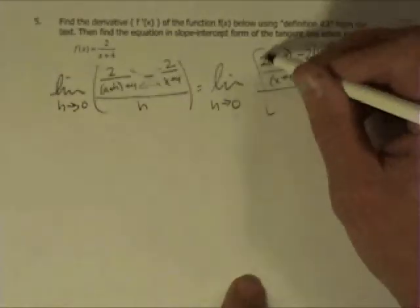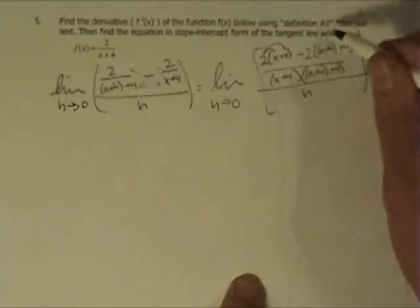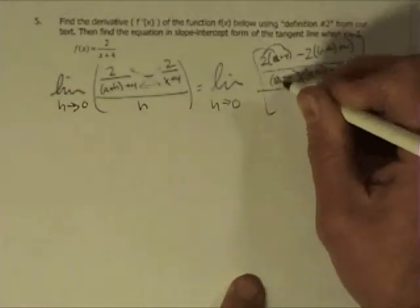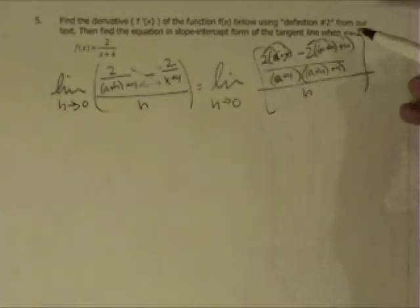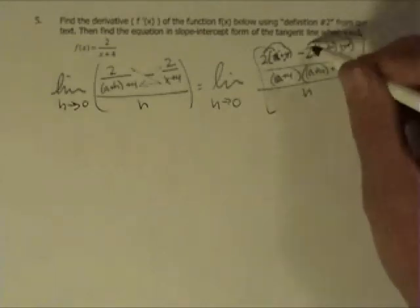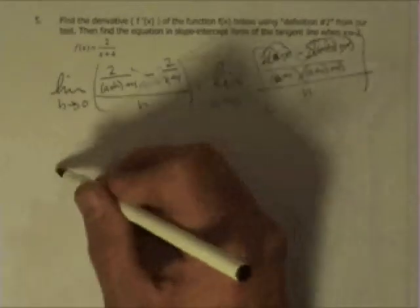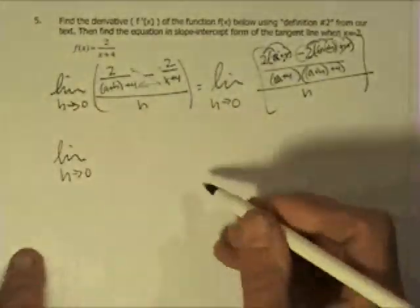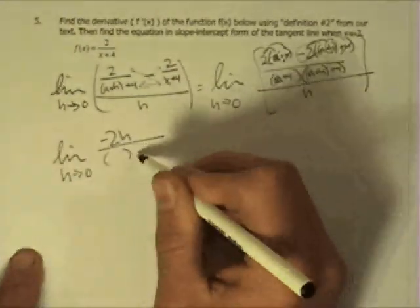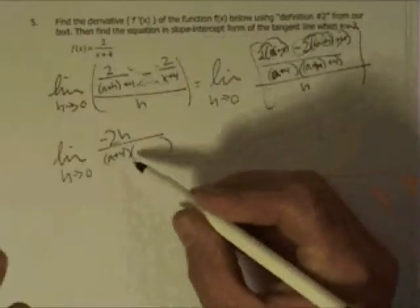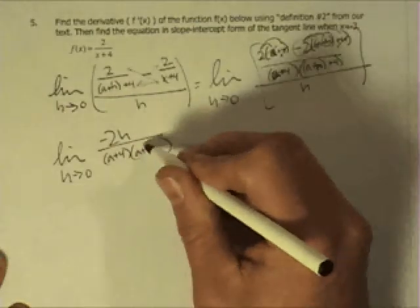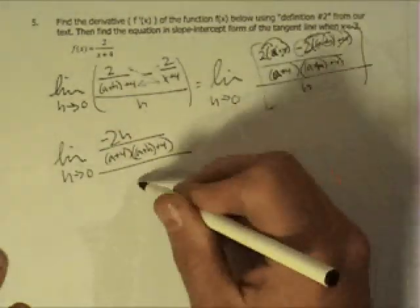All right, well, once you do that, and you distribute in 2x and then 8, and then you get, oh, that should be a, a plus 4, sorry. You get 2a plus 8, and then you get negative 2a, negative 2h, and then negative 8, so you'll see the 2a cancels with the negative 2a, the 8 cancels with the negative 8, and what you're left with is negative 2 times h. So, I'm writing it again, the limit as h approaches 0 of that negative 2h over that common denominator, a plus 4, and then a plus h plus 4, that denominator, then all over h.